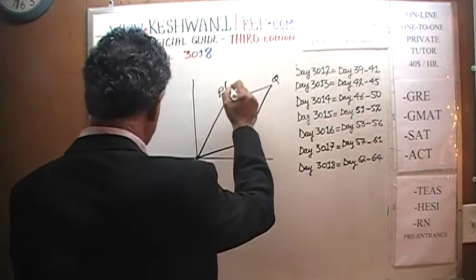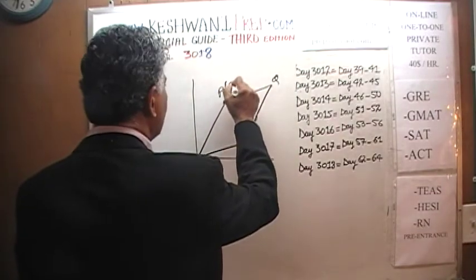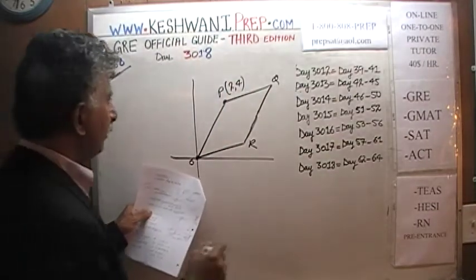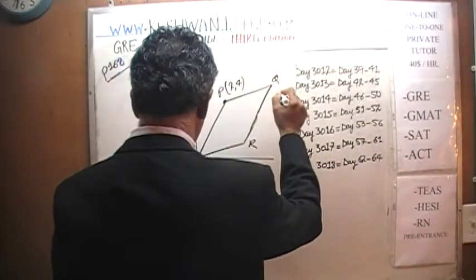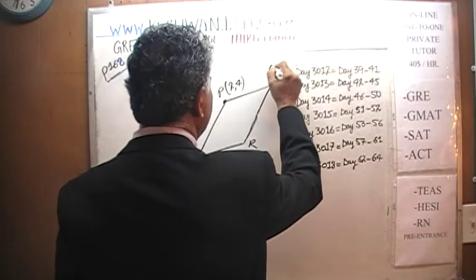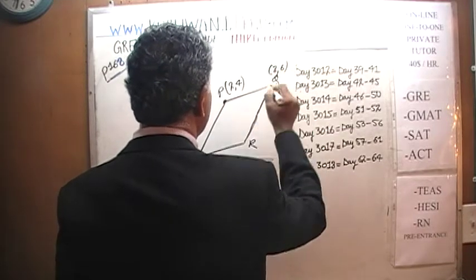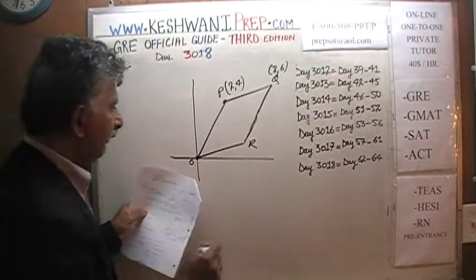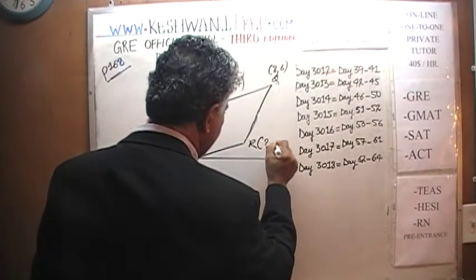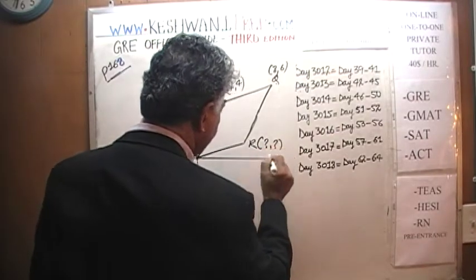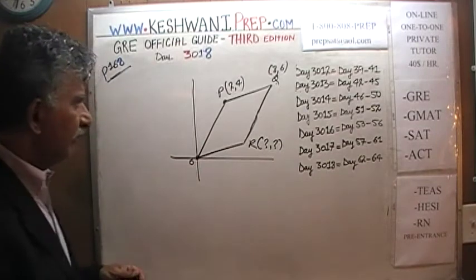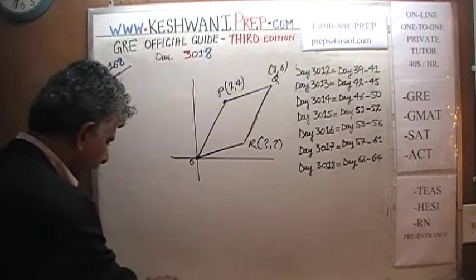We are told that P has coordinates of 2 and 4, and Q has coordinates of 8 and 6. The question simply is: what are the coordinates of point R? That's all they are looking for. It's a very simple, very straightforward process.